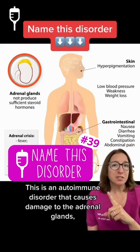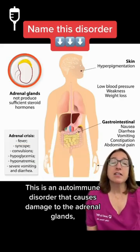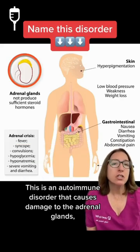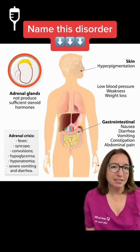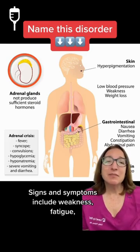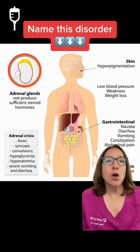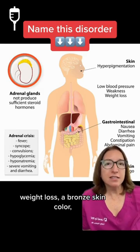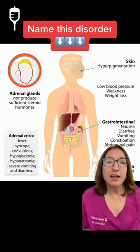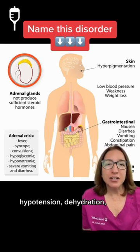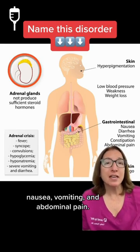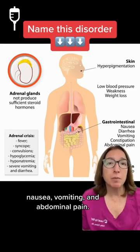This is an autoimmune disorder that causes damage to the adrenal glands, which leads to adrenal insufficiency. Signs and symptoms include weakness, fatigue, weight loss, a bronze skin color, hypotension, dehydration, nausea and vomiting, and abdominal pain.